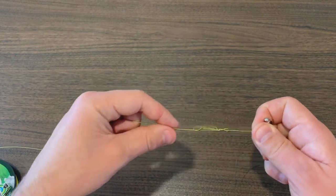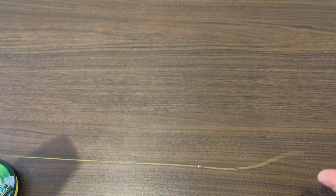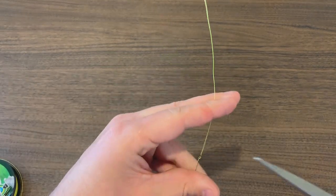You're going to wet your knot and pull it tight, and then you're going to clip the tag ends as close to the knot as possible.